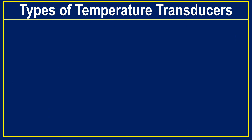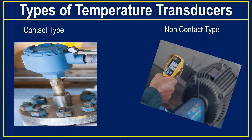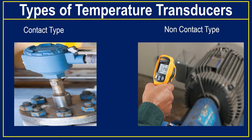In general, the temperature transducers can be classified into two categories: contact type and non-contact type. In contact type temperature transducers, the sensing element is in direct contact with the substance whose temperature is being measured. In non-contact type, the sensor is not in direct contact with the substance; they measure temperature by detecting the infrared thermal energy emitted by the material being measured.